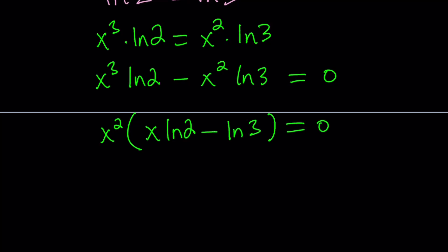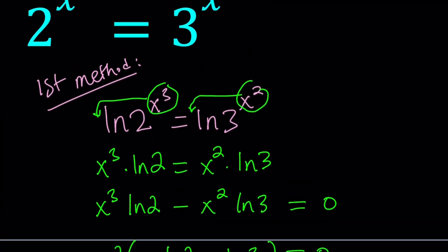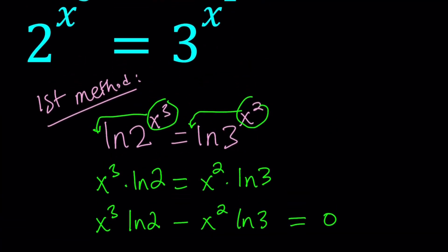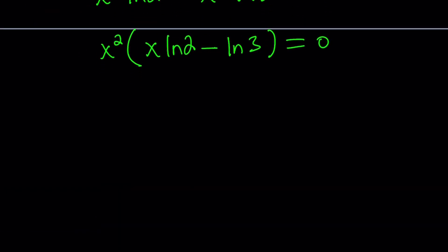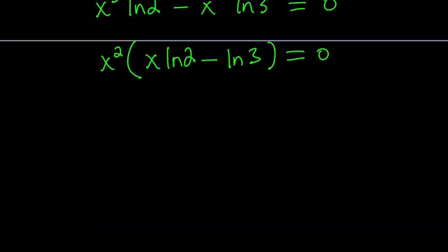We ln both sides. That didn't really change the domain because x is in the exponent, so it can be positive or negative. Let's solve each case. x squared equals 0 implies x equals 0. That is a valid solution if you plug it in.